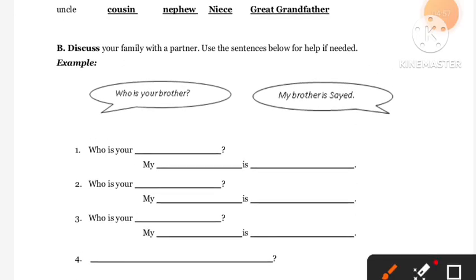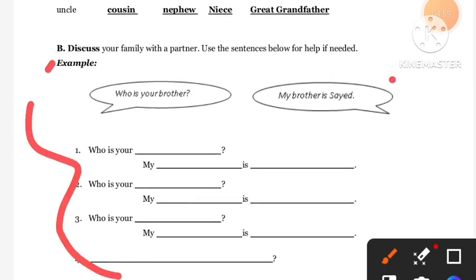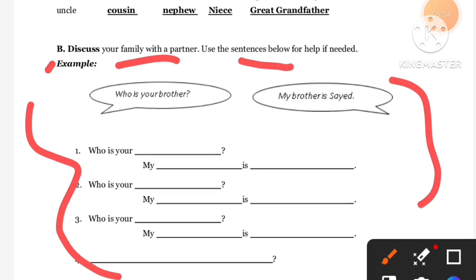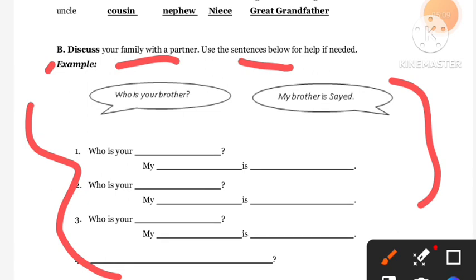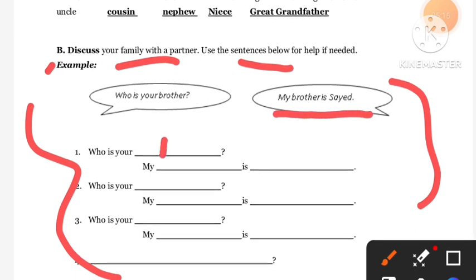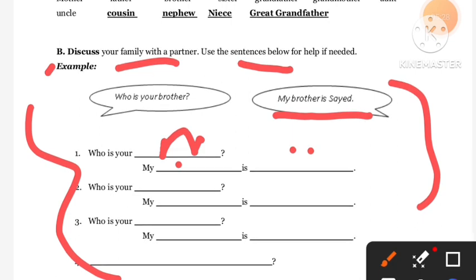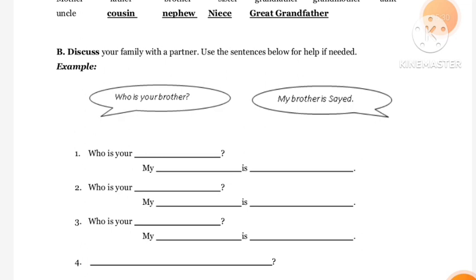After the activity, open SRB Part B and discuss your family with your partner using full sentences. For example: 'Who is your father? My father is BJ. Who is your mother? My mother is Jovia. Who is your sister? My sister is Nisha.' Complete the exercise like this.